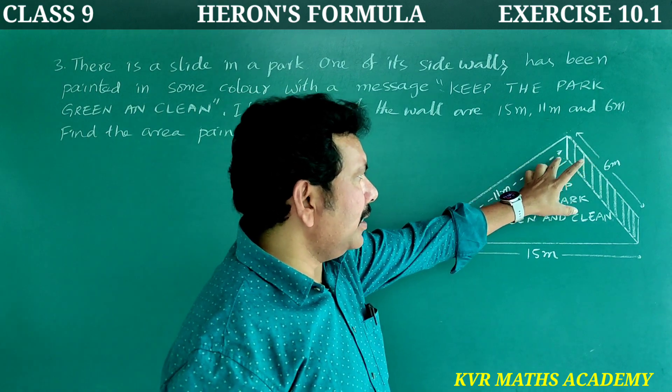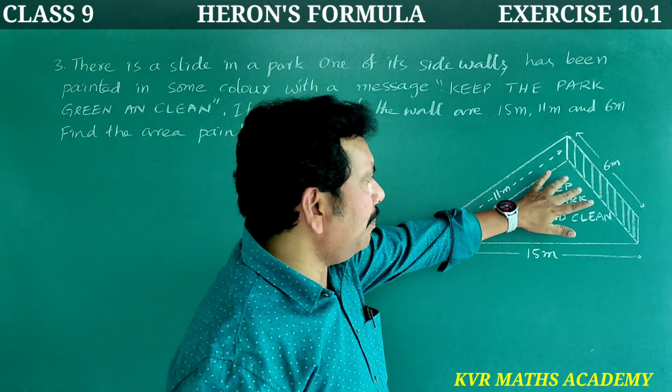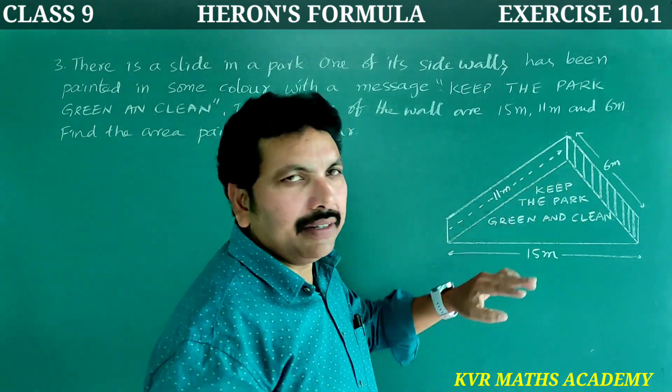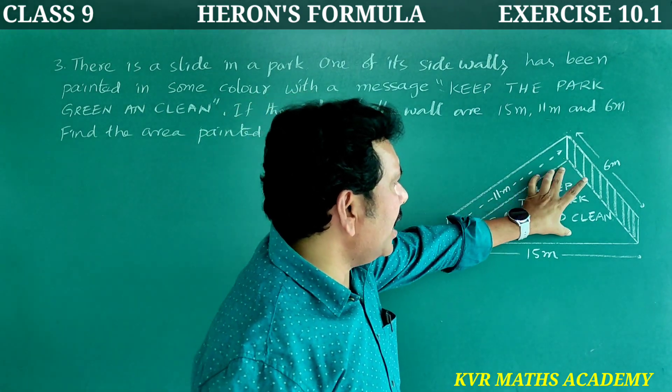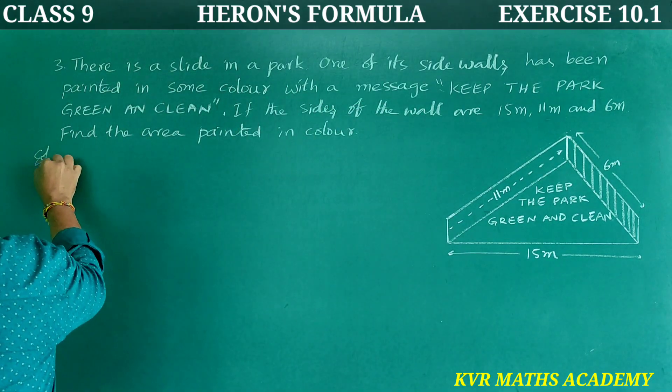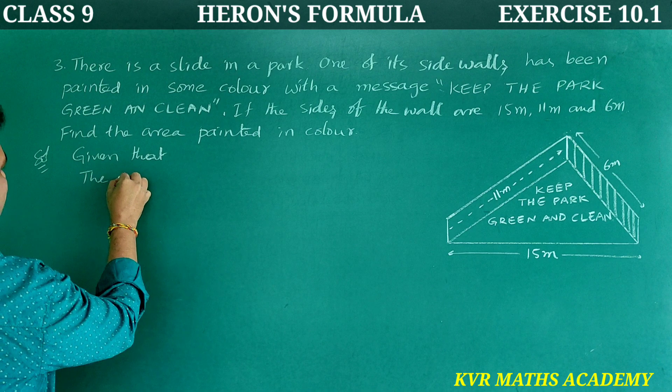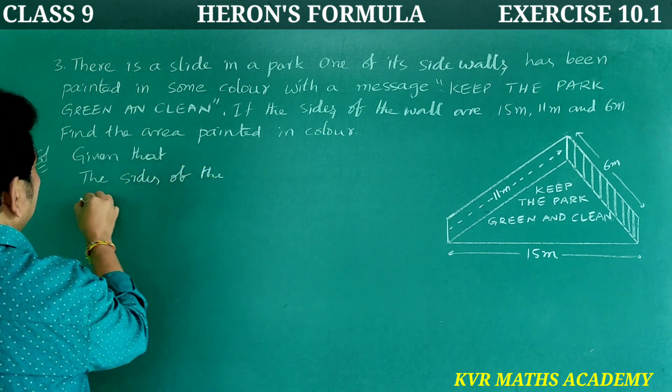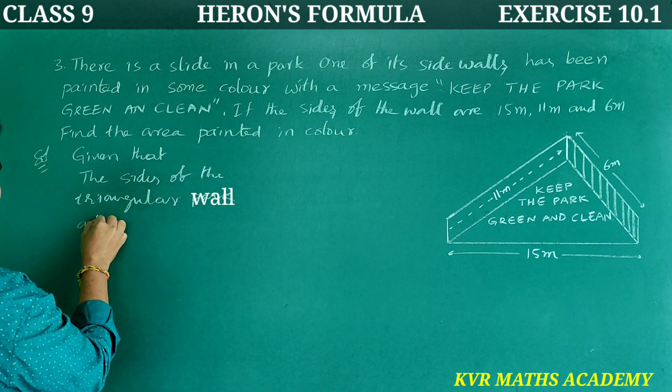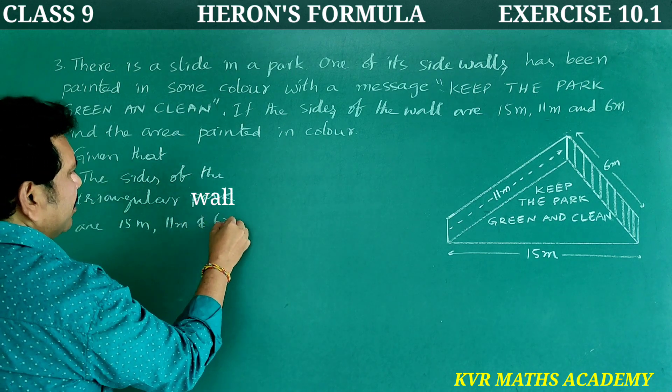So in the park, there is a slide. The side of the slide will be painted in color. This is a slide. It's solution: given that the sides of the triangular park are 15 meters, 11 meters and 6 meters.